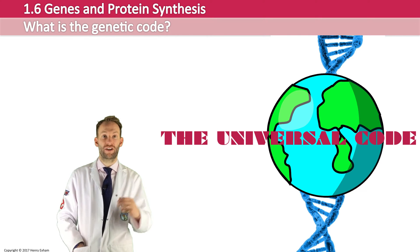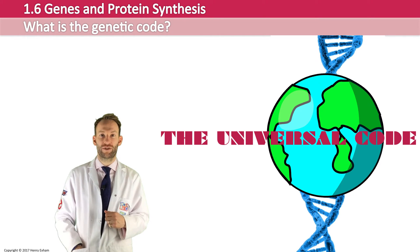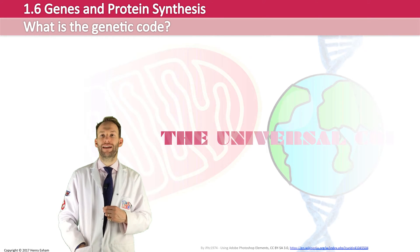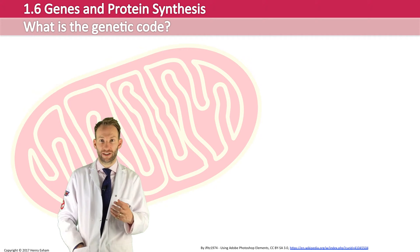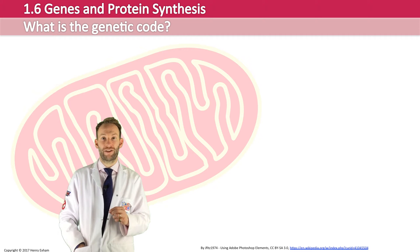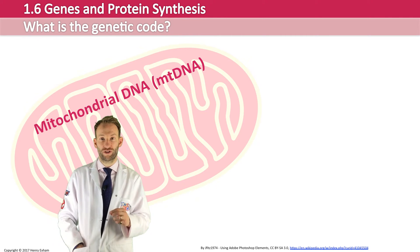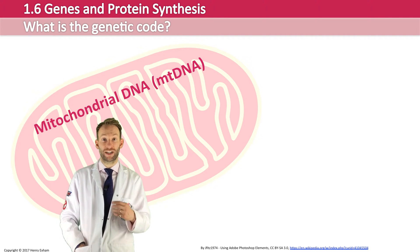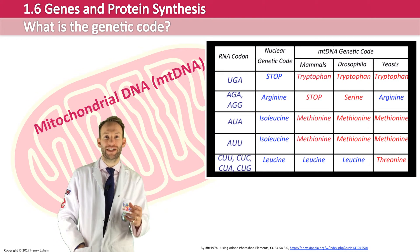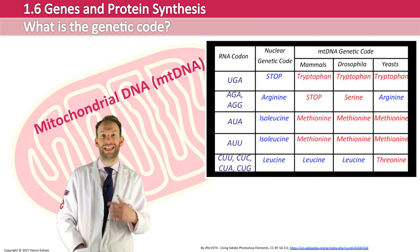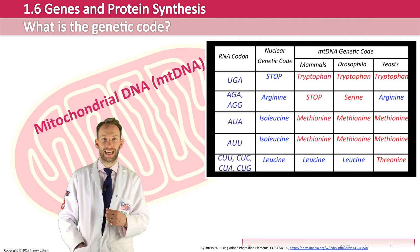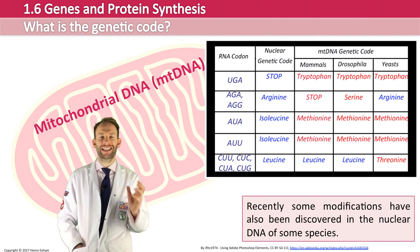There are a couple of exceptions to the genetic code being universal. The majority of these exceptions are found in the DNA inside the mitochondria — what we call mitochondrial DNA — which actually codes for slightly different amino acids than the same code would in the nuclear DNA. There are a few examples in this table here.